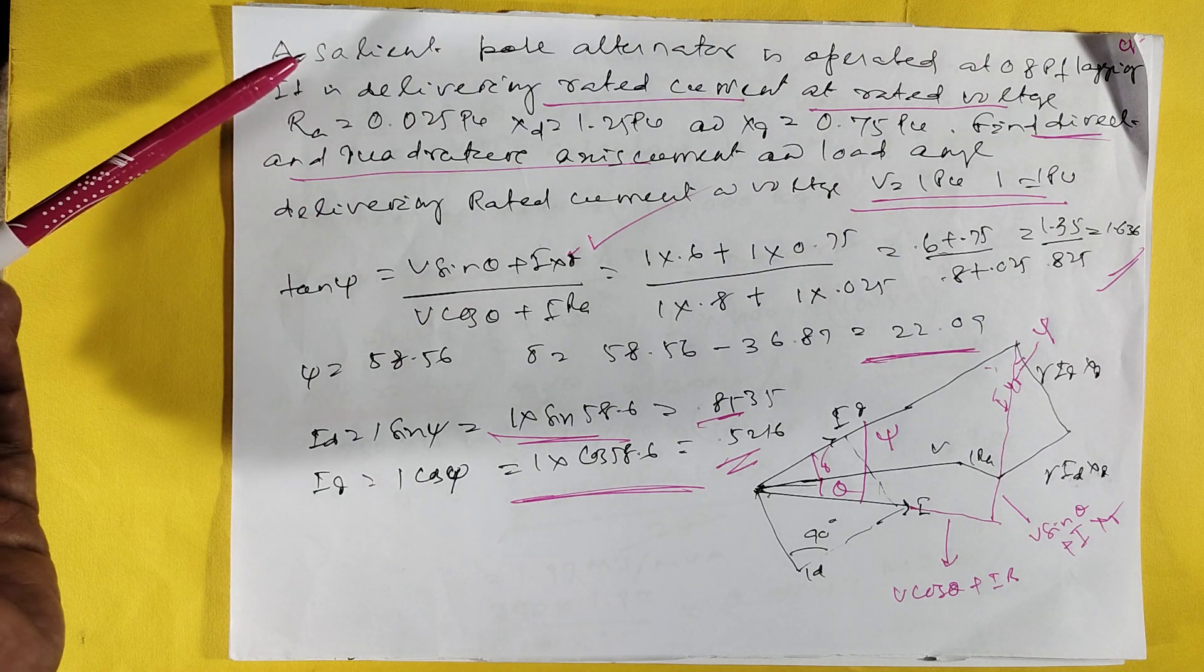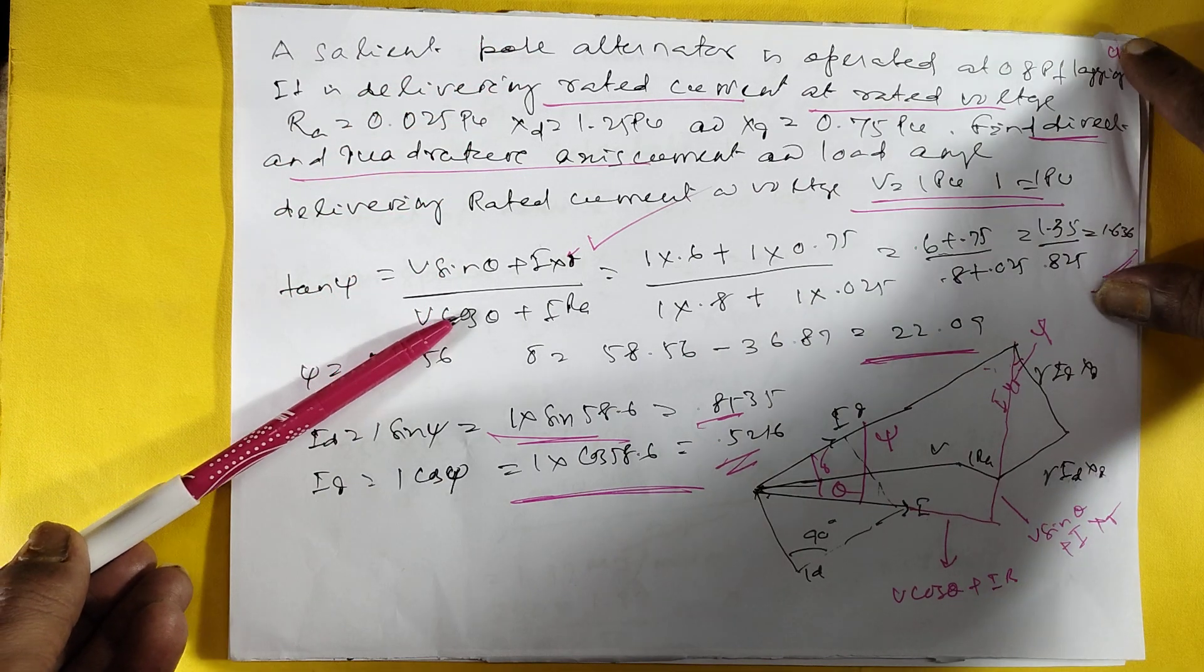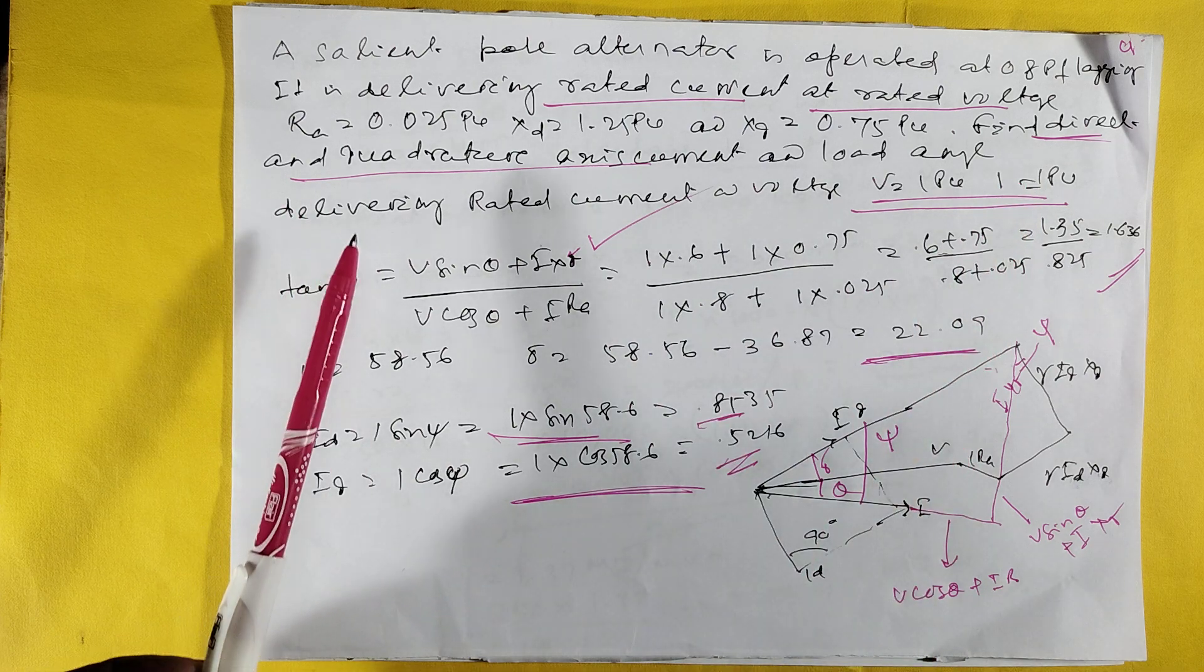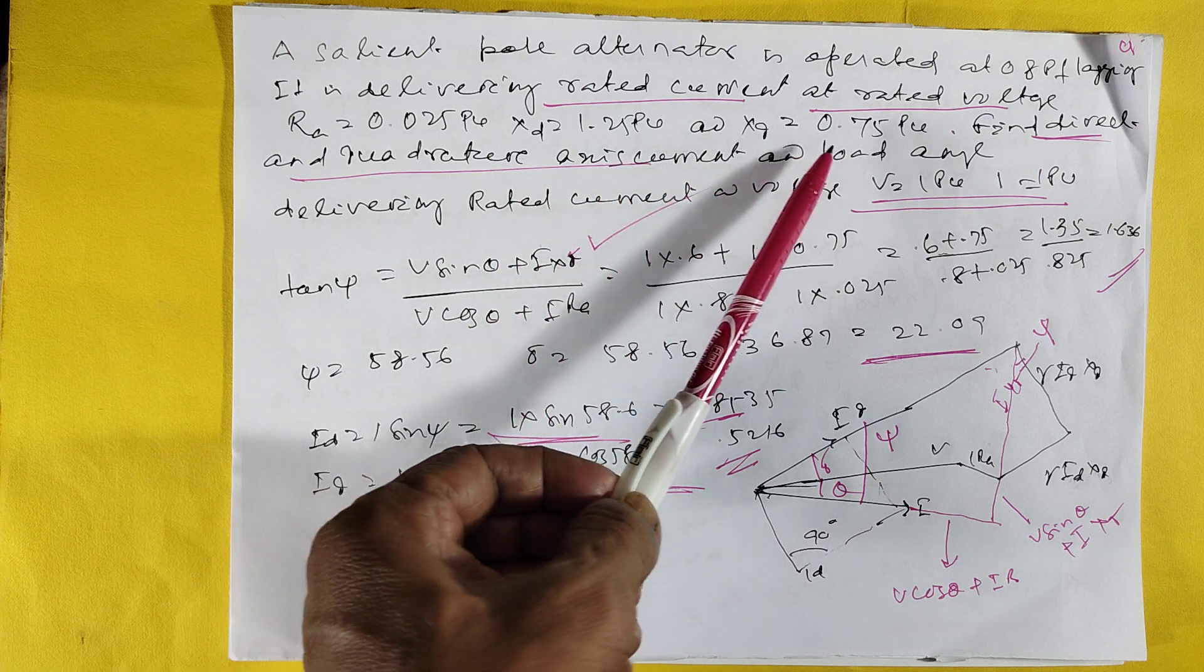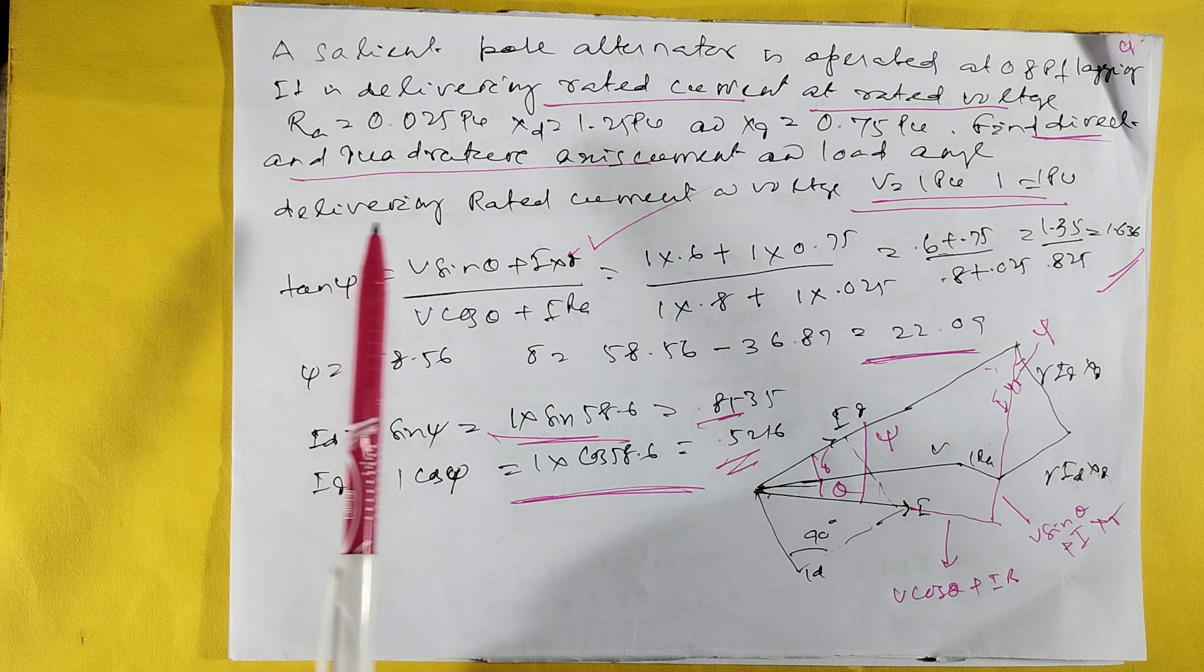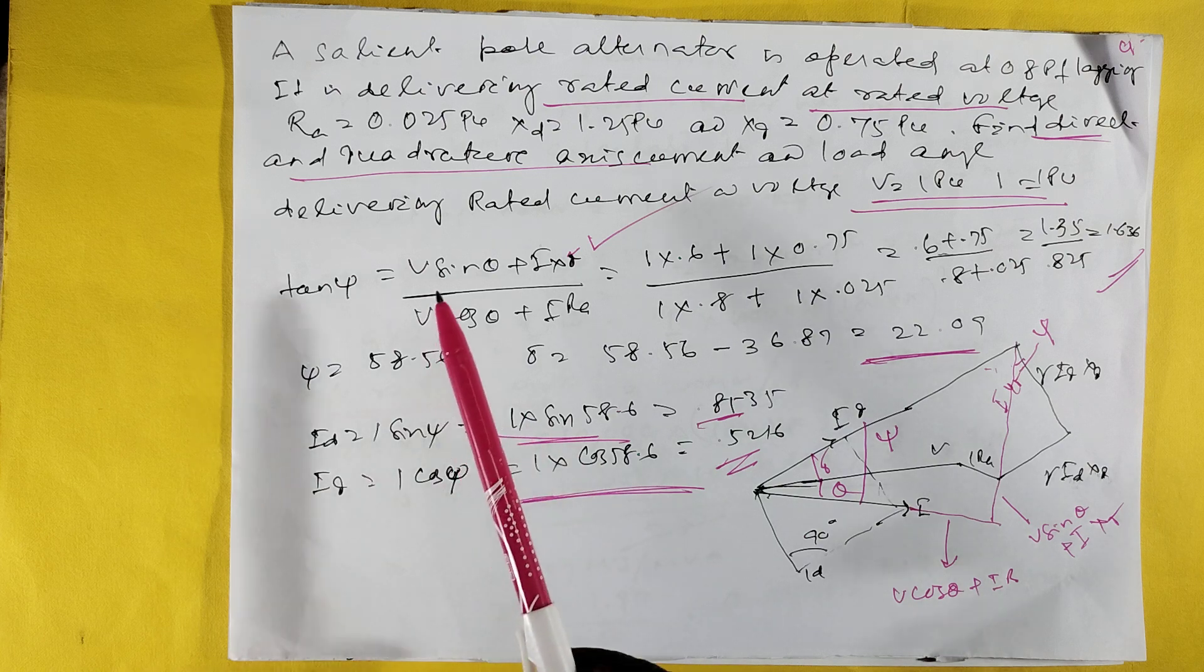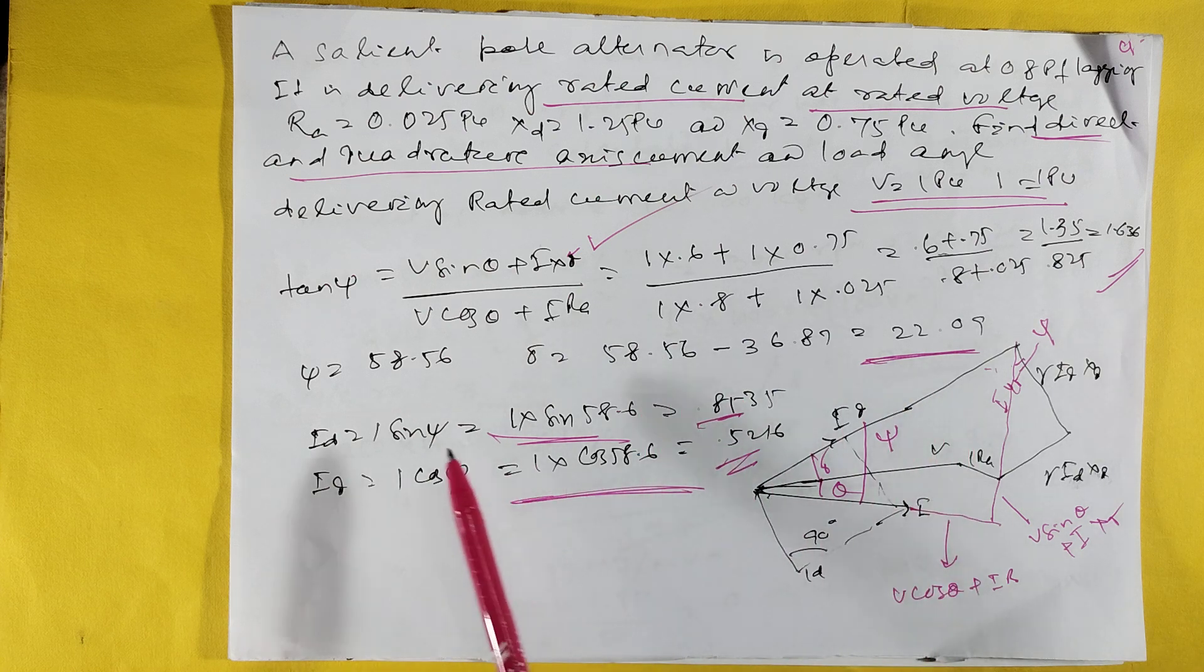A salient pole alternator is operated at 0.8 power factor lagging, delivering rated current at rated voltage. Ra = 0.25 per unit, Xd = 1.25 per unit, Xq = 0.7 per unit. Find direct and quadrature axis current. This is the circuit diagram. Tan θ = (V sin θ + I Xq)/(V cos θ - I Ra), coming to 58.56°.